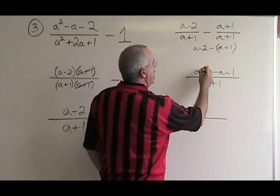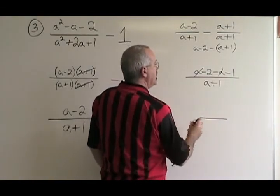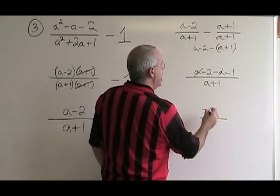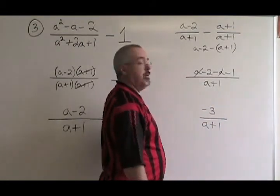a minus a cancels. Negative 2 minus 1 is negative 3. We have negative 3 over a plus 1, and that is our answer.